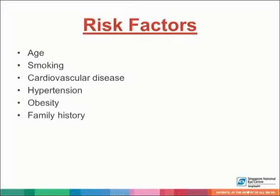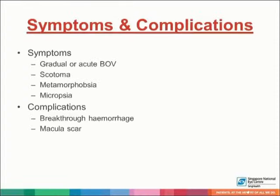The risk factors include aging, smoking, cardiovascular disease, hypertension, obesity, as well as family history. Symptoms include gradual or acute blurring of vision, presence of a central scotoma, as well as metamorphopsia or even micropsia. Complications include breakthrough hemorrhage or macular scarring.